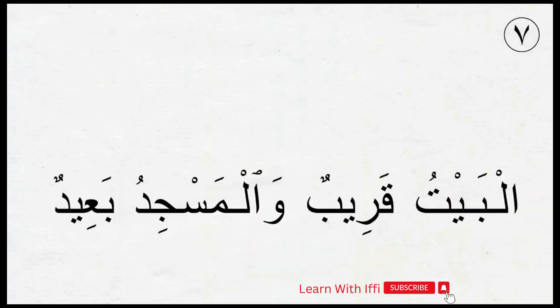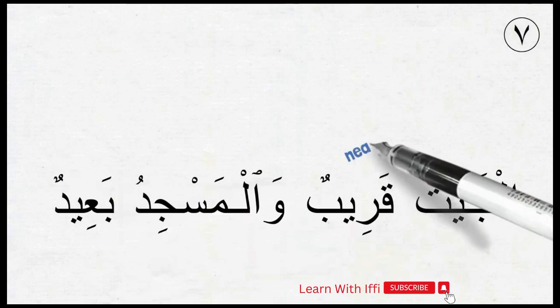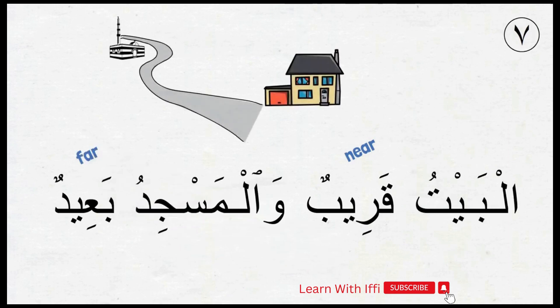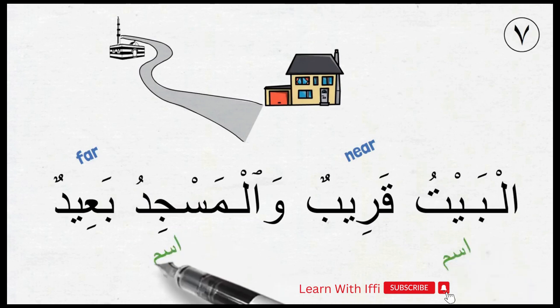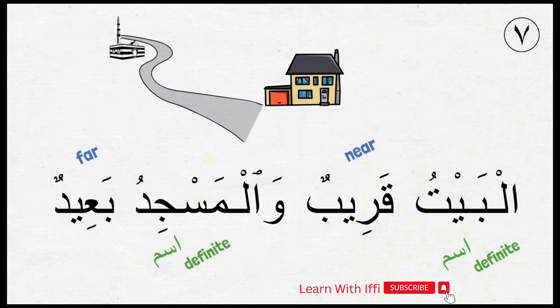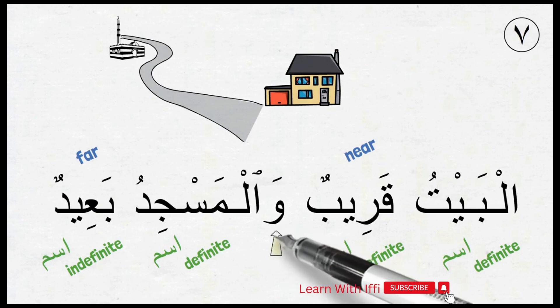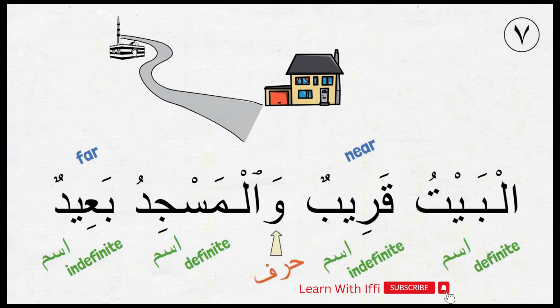Next sentence: أَلْبَيْتُ قَرِيبٌ وَالْمَسْجِدُ بَعِيدٌ. Here, قَرِيبٌ is 'near' and بَعِيدٌ is 'far,' so we are saying the house is near and the masjid is far. Both أَلْبَيْتُ and أَلْمَسْجِدُ are coming as definite ism because we are talking about some specific house and masjid. قَرِيبٌ and بَعِيدٌ are indefinite. How about وَ — is it definite or indefinite? Well, وَ is harf, and we cannot say it is definite or indefinite — only ism can be definite or indefinite.